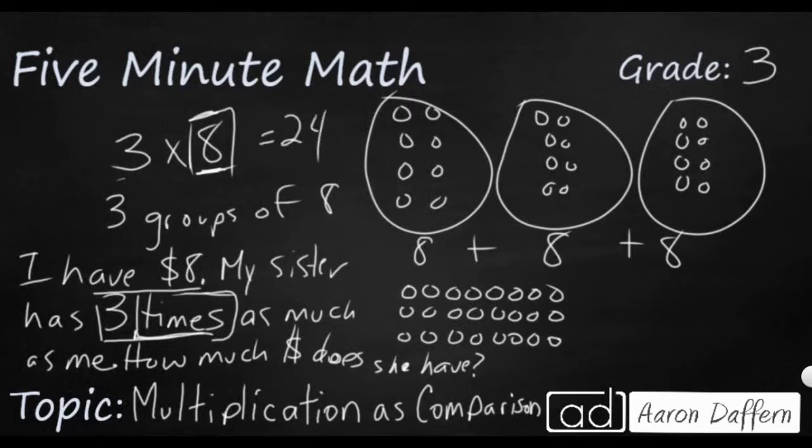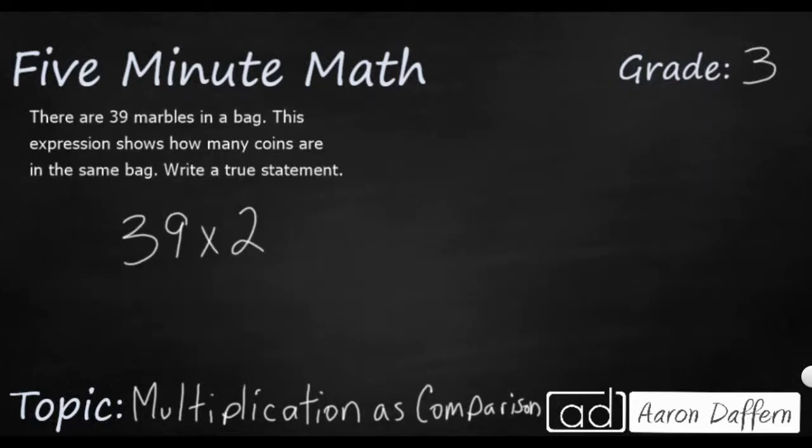So let's look at a different example. Here's another example. You might get something that says there are 39 marbles in the bag, and this expression, and this word right here, expression, is actually referring to this down here, this 39 times 2. We call it an expression when there is not an equal sign. If we were to put an equal sign there, then it would be an equation. But since we don't have an equal sign, we simply have an operation here, in this case multiplication, we call it an expression.